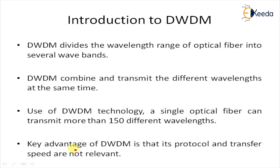WDM uses one optical fiber to transmit multiple optical carriers with different wavelengths at the same time. It divides the wavelength range of an optical fiber into several wave bands, where each wave band is used as an independent channel to transmit a predetermined wavelength optical signal. Using this feature, multiple signals can be transmitted using predetermined wavelengths in optical technology.